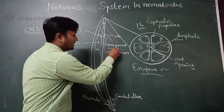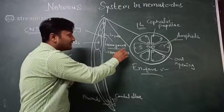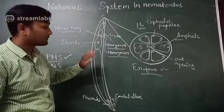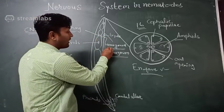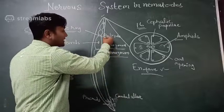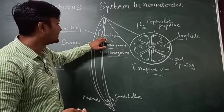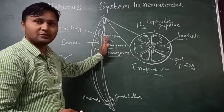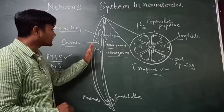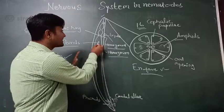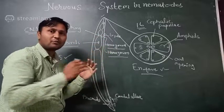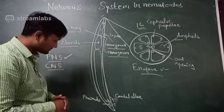Two other important sensory organs are the hemizonid and hemizonion. They are present near the excretory pore — the hemizonid is posterior to the excretory pore, and the hemizonion is just behind the excretory pore, parallel to the nematode. Additionally, one pair of deirids is present on both lateral sides near the basal bulb; these are also tactile receptors.